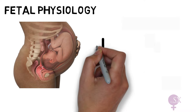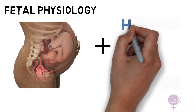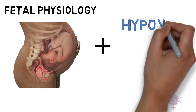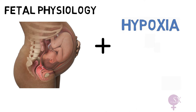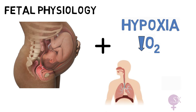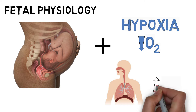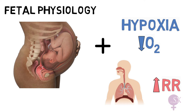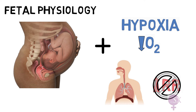We need to understand how a fetus reacts to situations of hypoxia during labor. A normal adult would react to hypoxia simply by increasing their respiratory rate to increase the oxygen levels in the blood. But of course, it is not possible for a fetus submerged in amniotic fluid. So what happens?